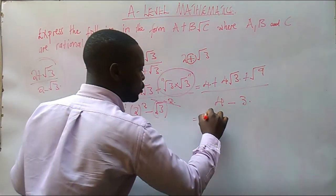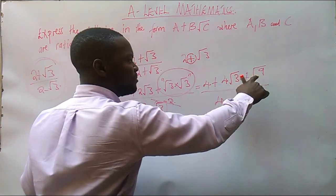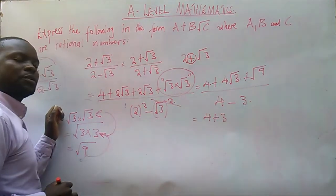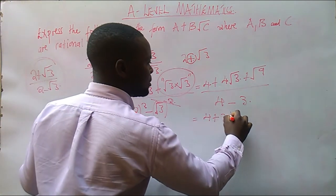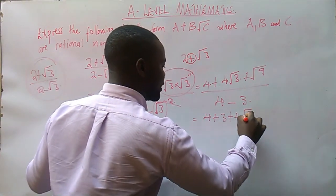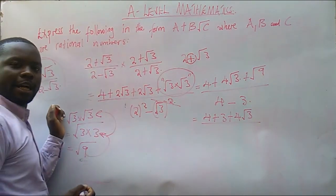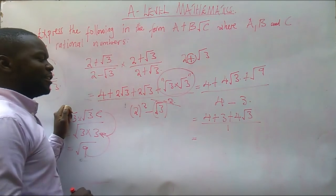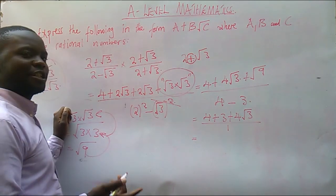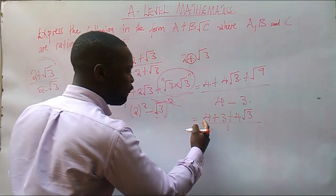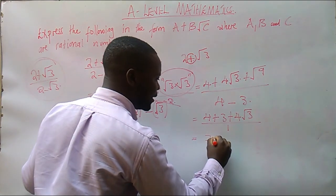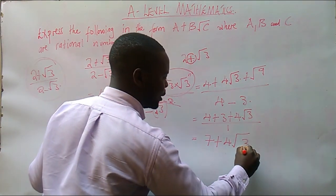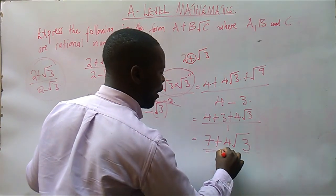So from there, we have got 4 plus, remember that the square root of 9 is positive 3. The square root of 9. And then we have got plus 4 root 3. Everything divided by 4 minus 3 is 1. Then, the only thing remaining now is for us to finish it. Let's finish it. 4 plus 3 is 7 plus 4 root 3. So this is our answer.